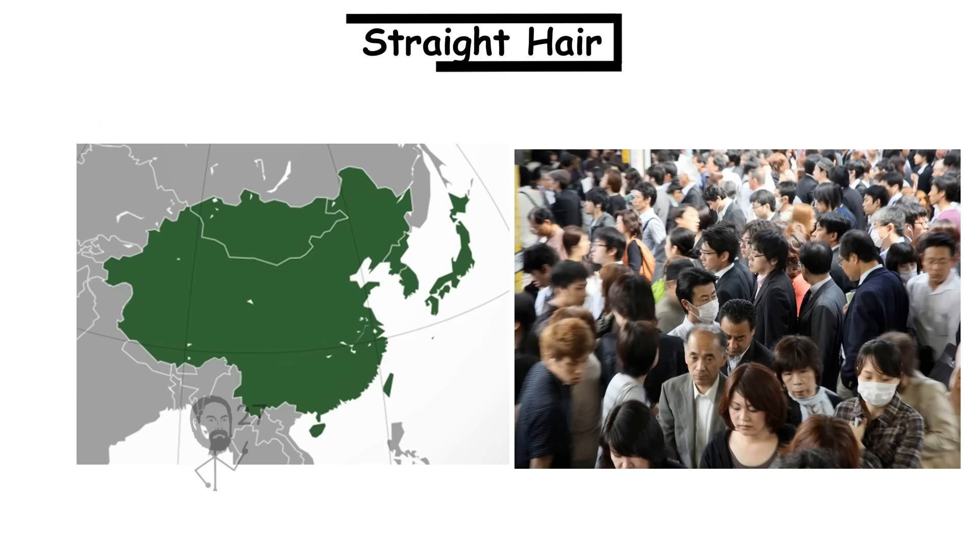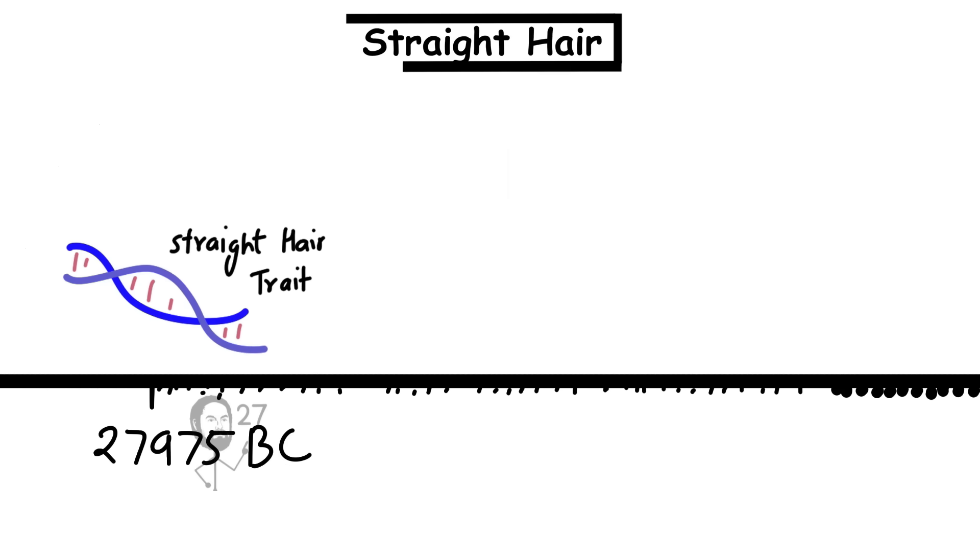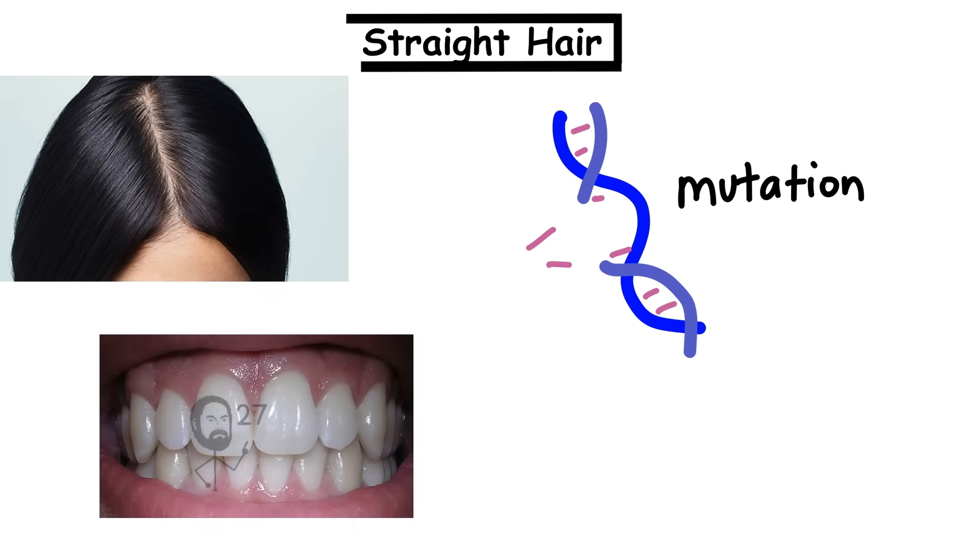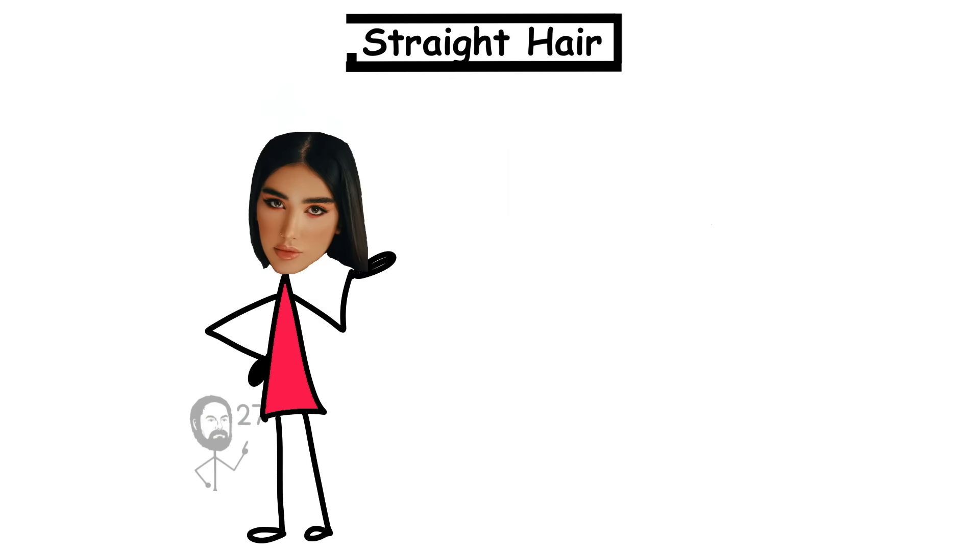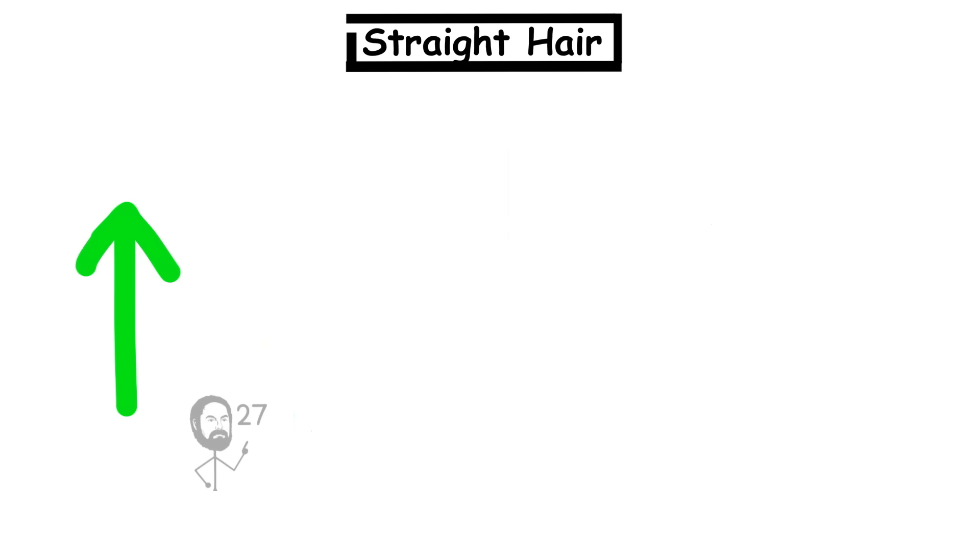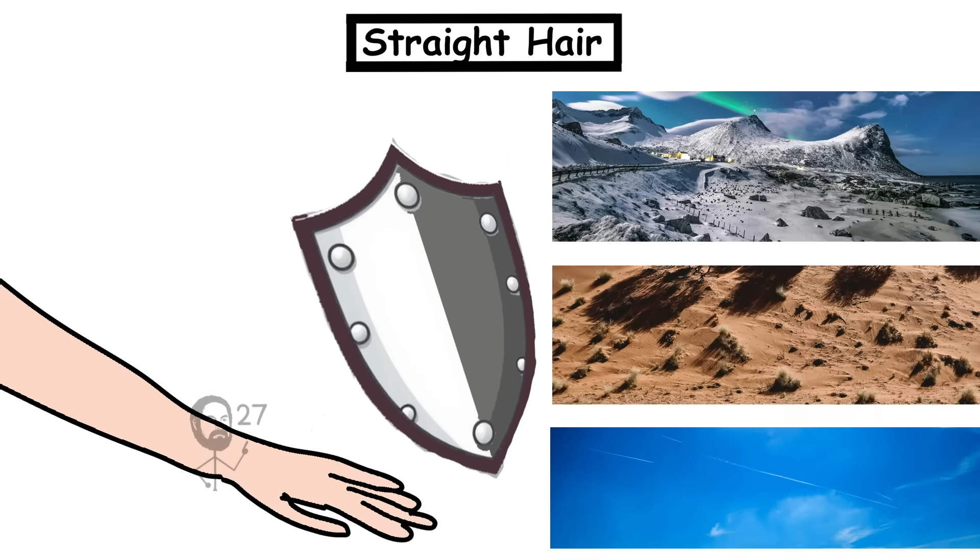In East Asian populations, straight hair prevalence exceeds 90%. This trait emerged roughly 30,000 years ago through a mutation that not only affected hair structure, but also altered features like tooth shape, sweat gland density, and facial bone development. People with this variant tend to grow thicker hair strands and have more active sebaceous and sweat glands, traits that enhance thermoregulation and skin protection in cold, dry, wind-exposed environments.